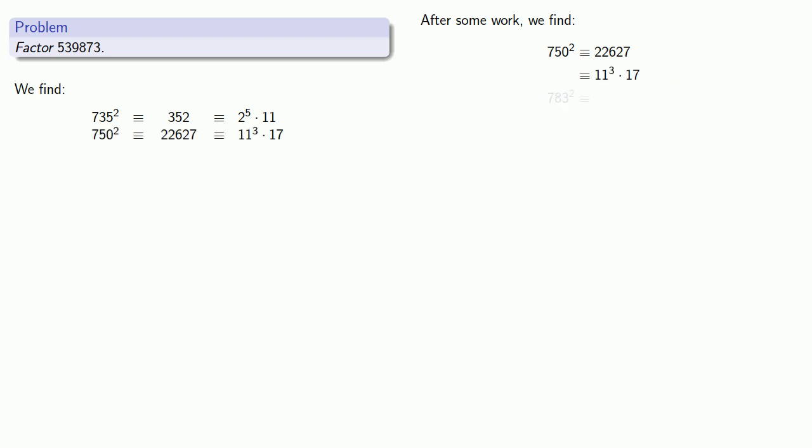After some more work, we find that 783 squared is 73216. 801 squared is 101728, which factors as 2^5 times 11 times 17^2.